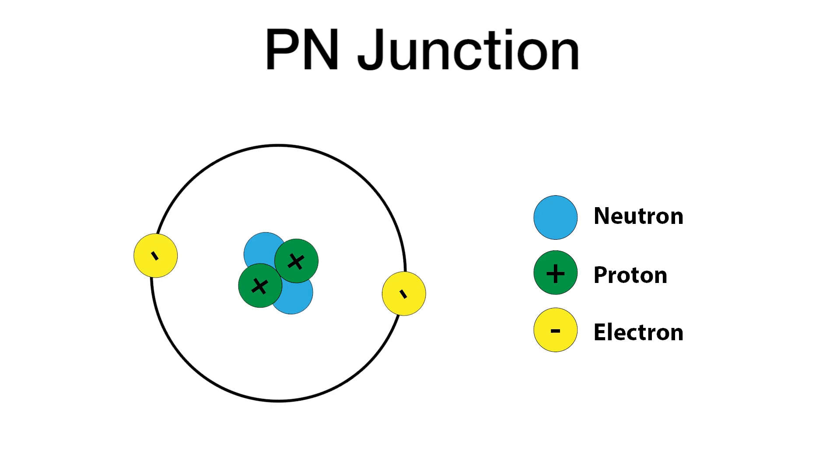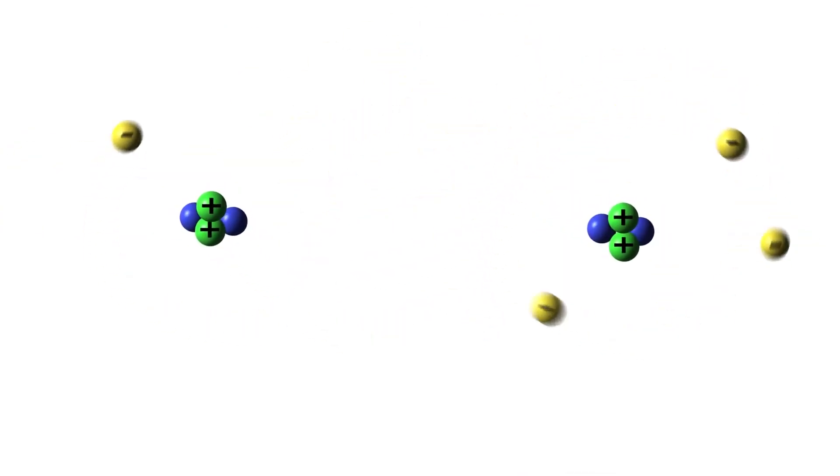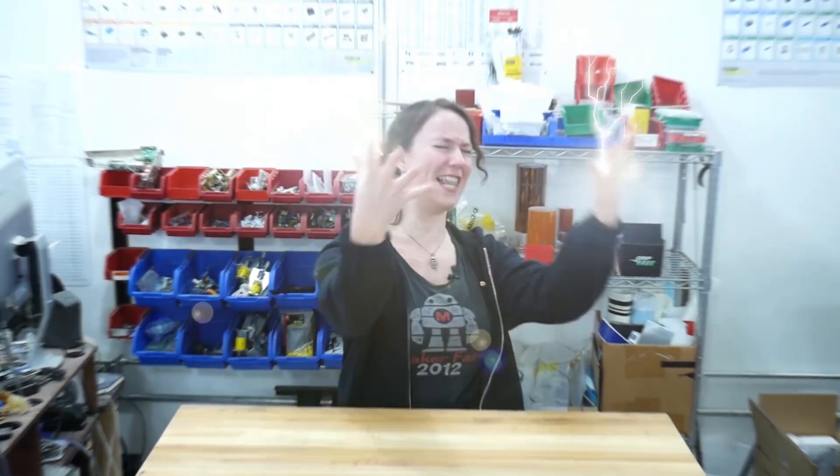We'll start by looking at p-n junctions. A p-n junction, how does it function? Previously, we've talked about how electricity works by electrons passing from one atom to another. If you're not familiar with this, look back at the Science of Electricity episode.